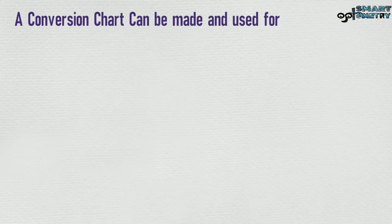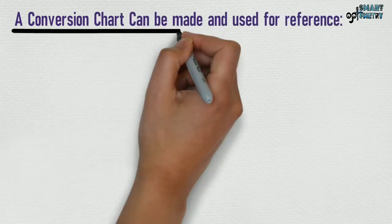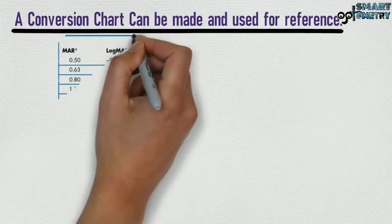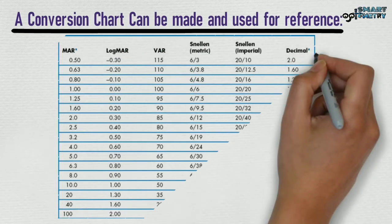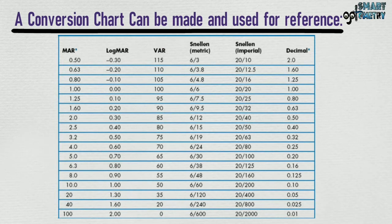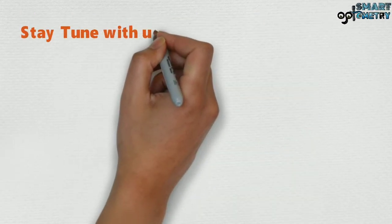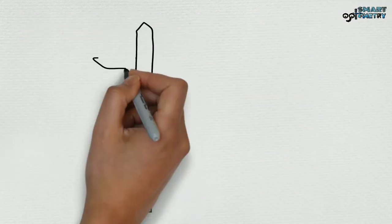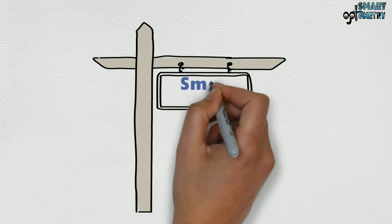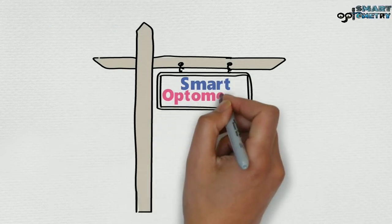This is the conversion chart that can be made and used for reference when converting Snellen's fraction to logMAR decimal score. Stay tuned with us for more information at Smart Optometry.